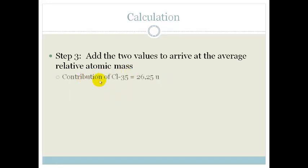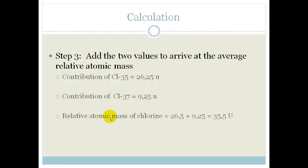Now we need to add the two. We know that the contribution of chlorine-35 is 26.25. We know that the contribution of chlorine-37 is 9.25. So if we add the two together, we get the relative atomic mass of chlorine, which is 35.5 units.